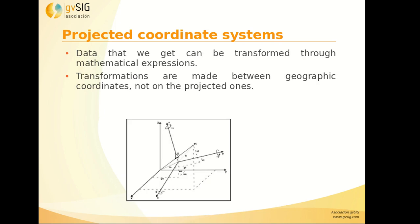We can also transform between different reference systems. If we re-project from one reference system to another, sometimes we have to apply transformations, because if we don't apply them, we can get an error. We can verify that both layers overlap correctly once the proper transformation is applied.